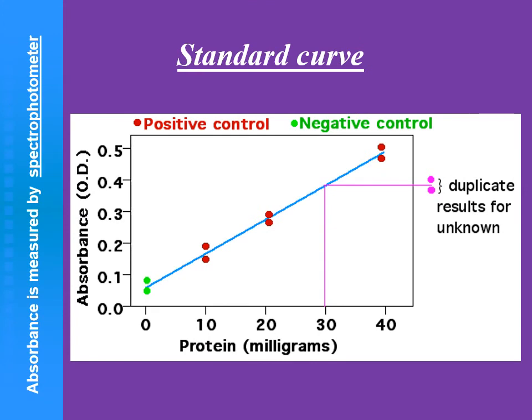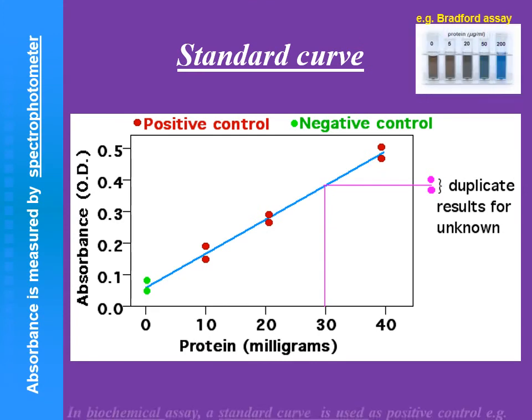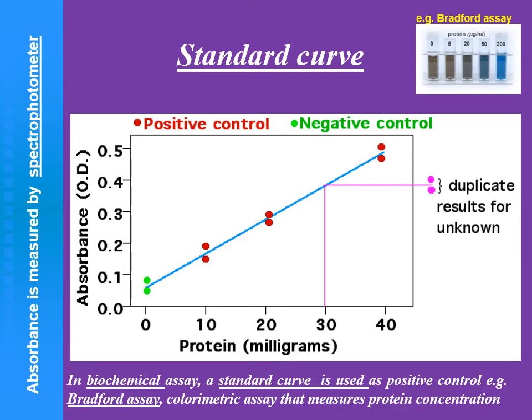This is the standard curve in biochemical assay. One of the most important and very commonly used is the Bradford assay for measuring the concentration of protein in tissue samples. This is a colorimetric assay and the absorbance is measured by spectrophotometer.